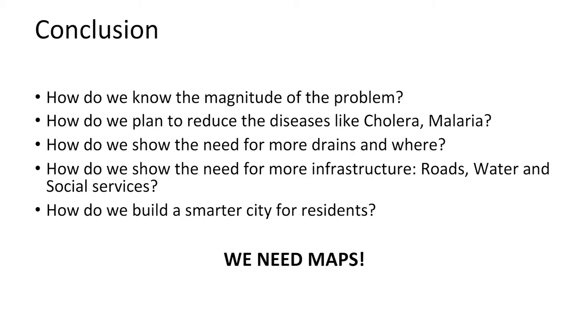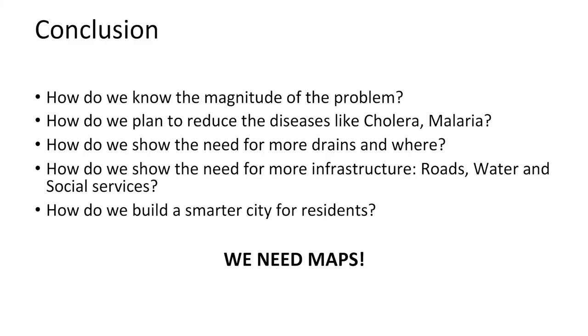We also ask ourselves: how do we show the need for more infrastructure? As I mentioned, 74,000 people in one square kilometer, 12,000 households — without any map, it is difficult to plan. We need roads, we need water, we need social services. In most of this area, the public water system has been dismantled because it is totally congested.